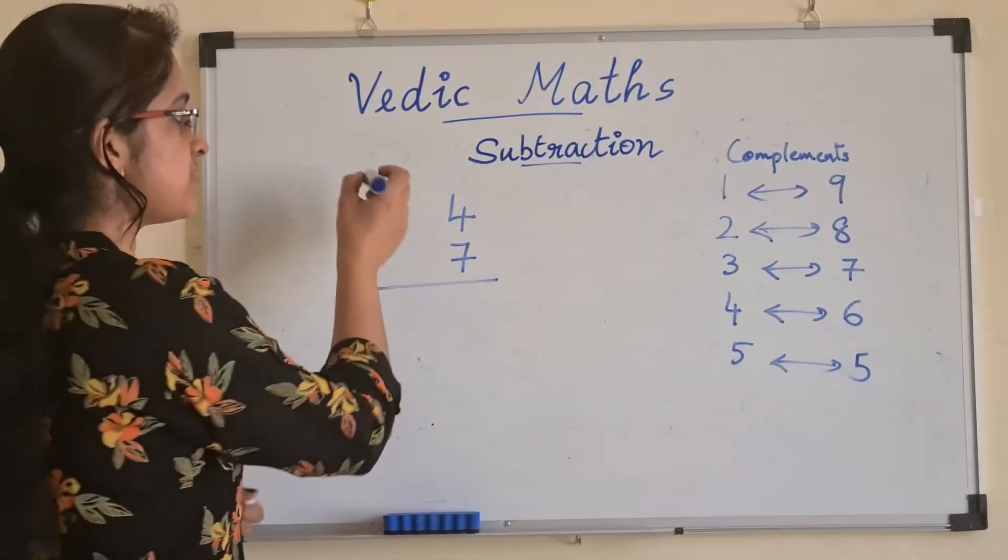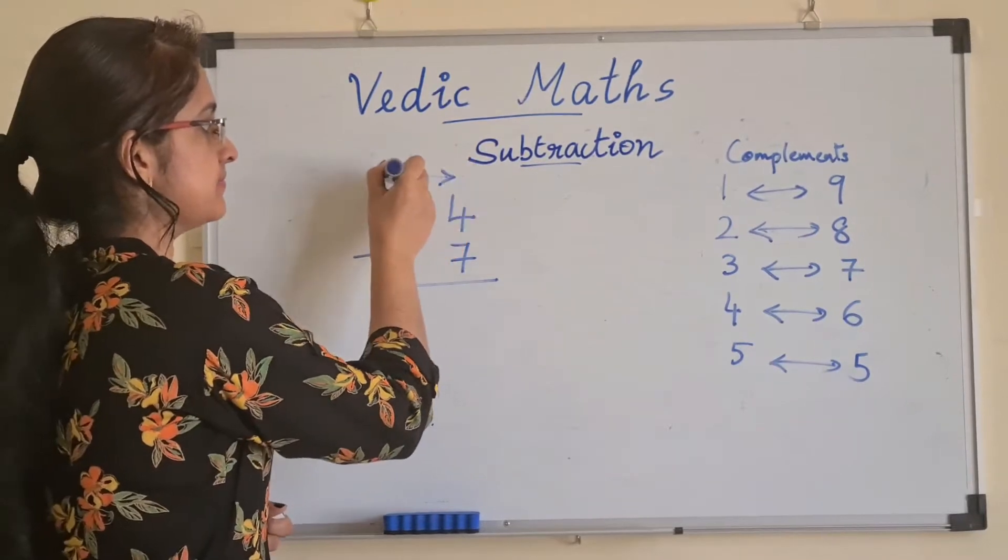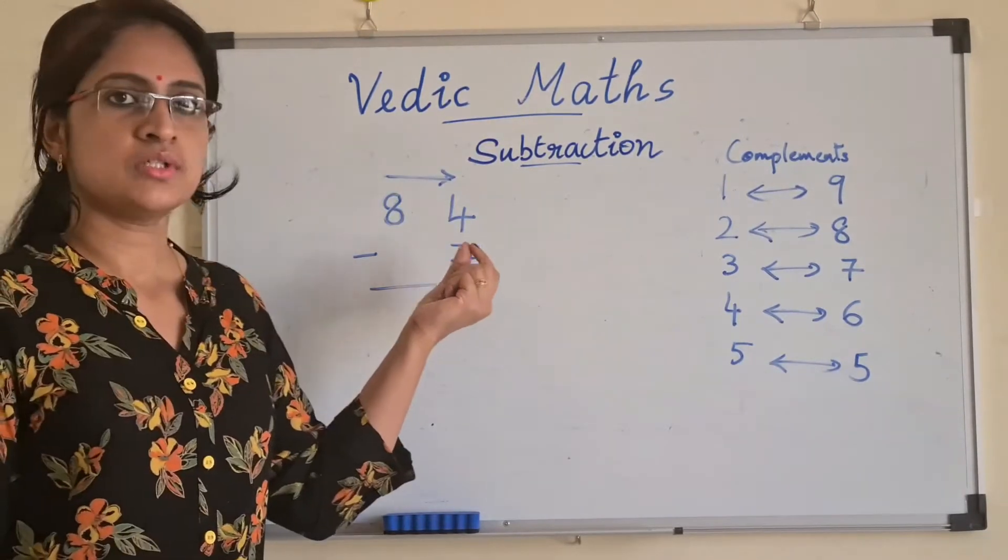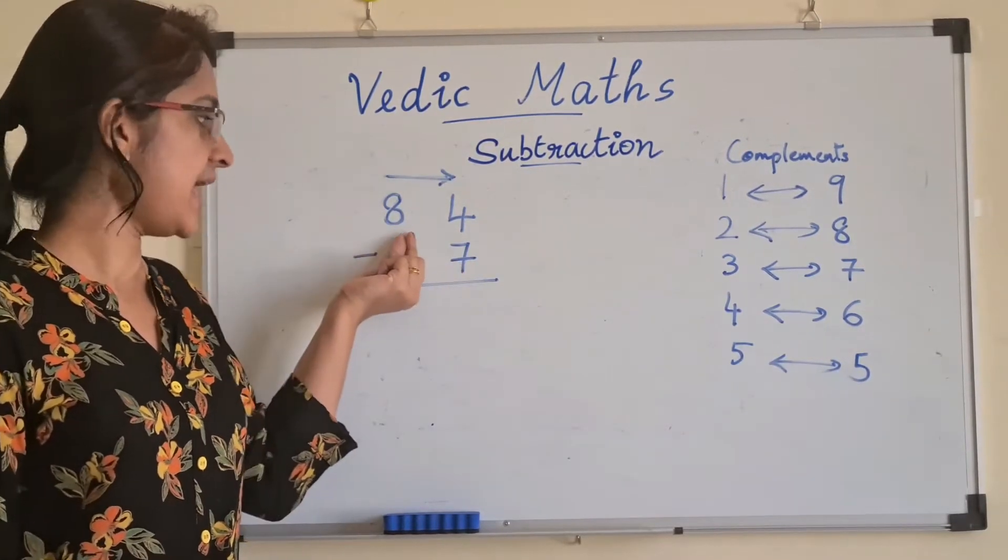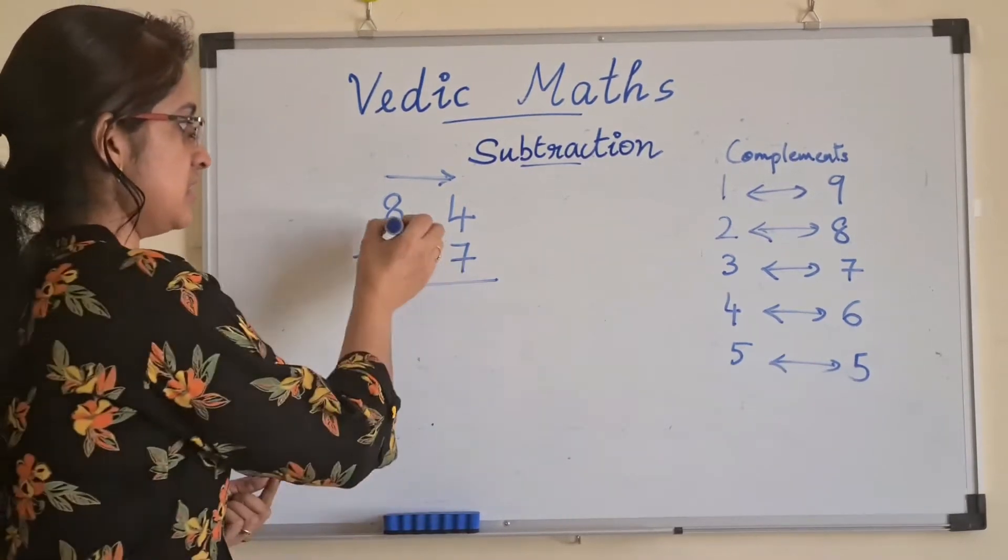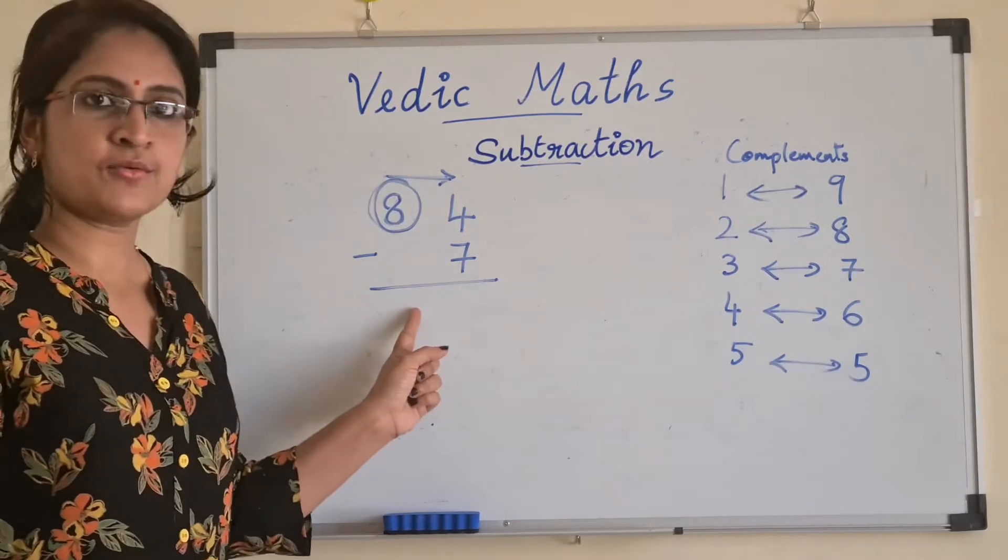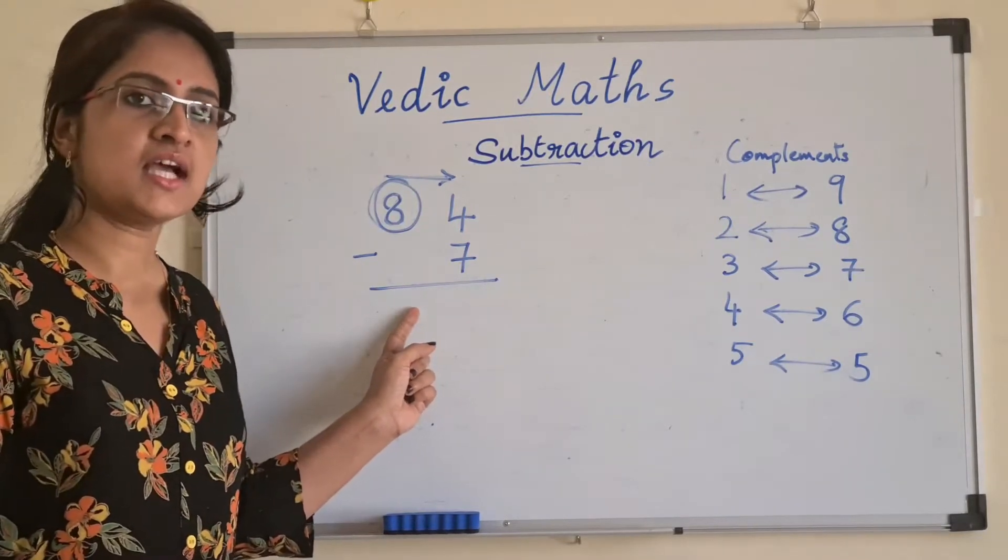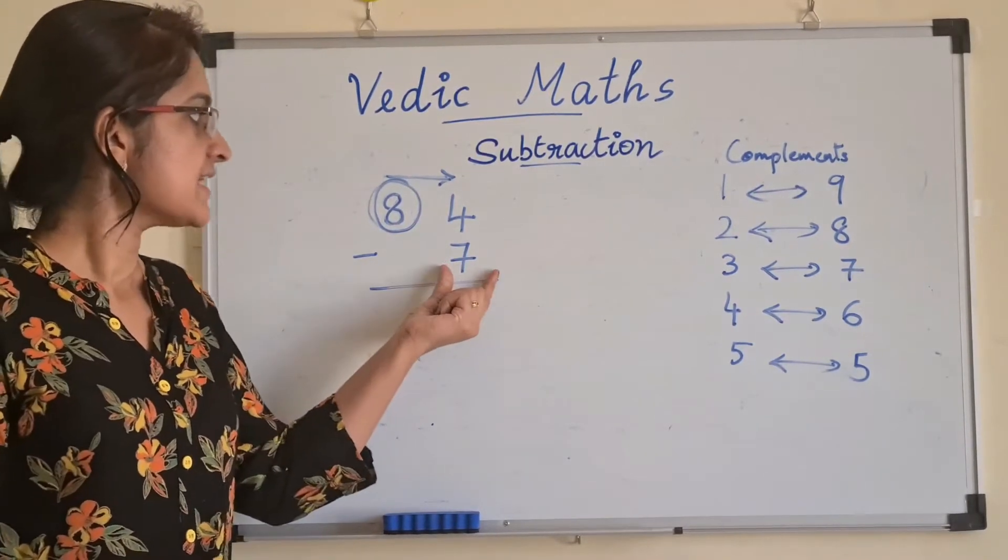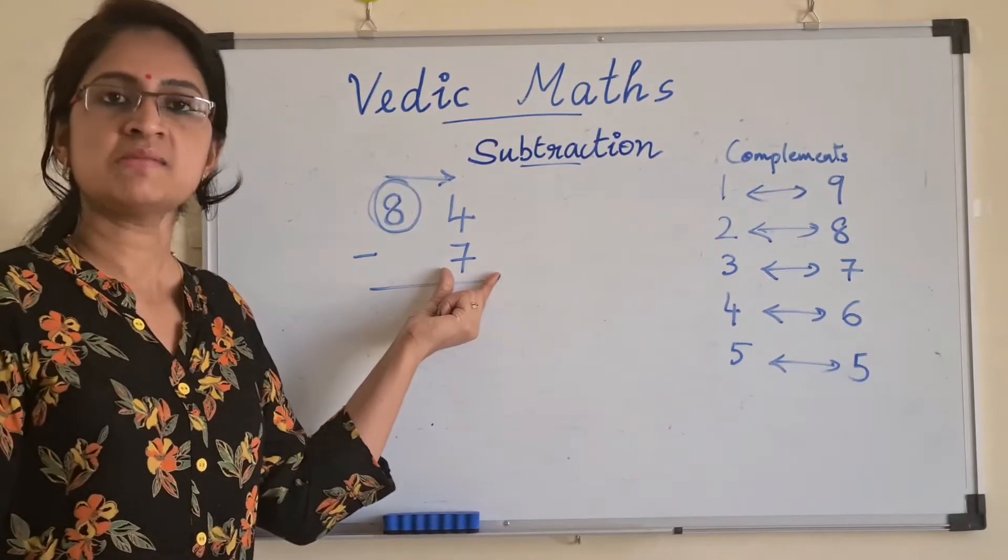We are going to move from left to right. Taking the first digit which is 8, before writing 8 down here, we are going to see whether the next pair is a match or a mismatch combination.